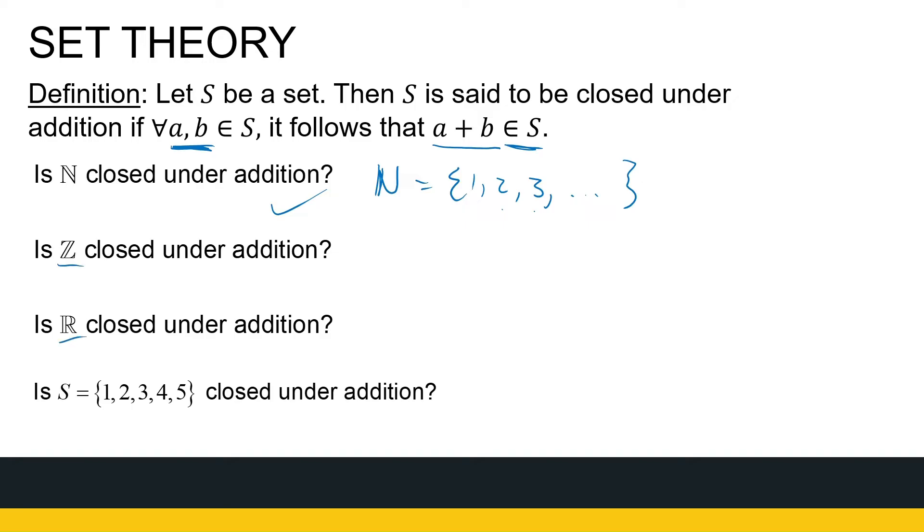Same for integers and real numbers. They're closed under addition. Now let's look at the set of numbers 1, 2, 3, 4, 5. We say that set is closed if I take any two elements, add them together, I get something that's again in the set. For example, 1 plus 3. 1 is in S, 3 is in S. I add them together, I get 4, and 4 is again in S.